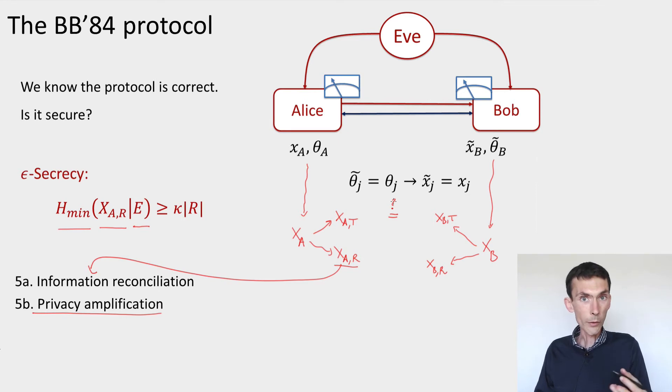What privacy amplification achieves is that as long as the minentropy of the bits used for the task is large enough, then we know that we can obtain a secure key, for instance, by applying a quantum proof extractor based on two-universal hashing that we saw last week. So this is what we have to show. How are we going to argue it?